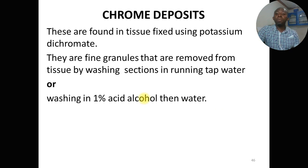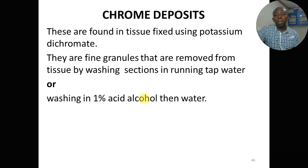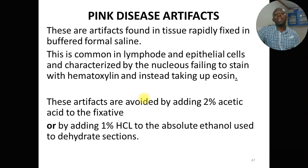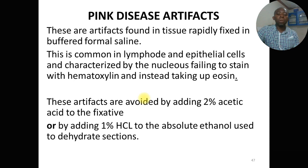Chrome deposits are formed by oxidizing fixatives like potassium permanganate and are found in tissue fixed with potassium dichromate. They are fine granules removed by washing sections in running water or in 1% acid alcohol followed by water. Pinkish disease artifacts are found in tissue rapidly fixed in buffered formosaline, common in lymph nodes and epithelial cells, characterized by the nucleus failing to stain with hematoxylin and instead taking up eosin — the reverse of normal. These artifacts are avoided by adding 2% acetic acid to the fixative or 1% hydrochloric acid to absolute ethanol used to dehydrate sections.